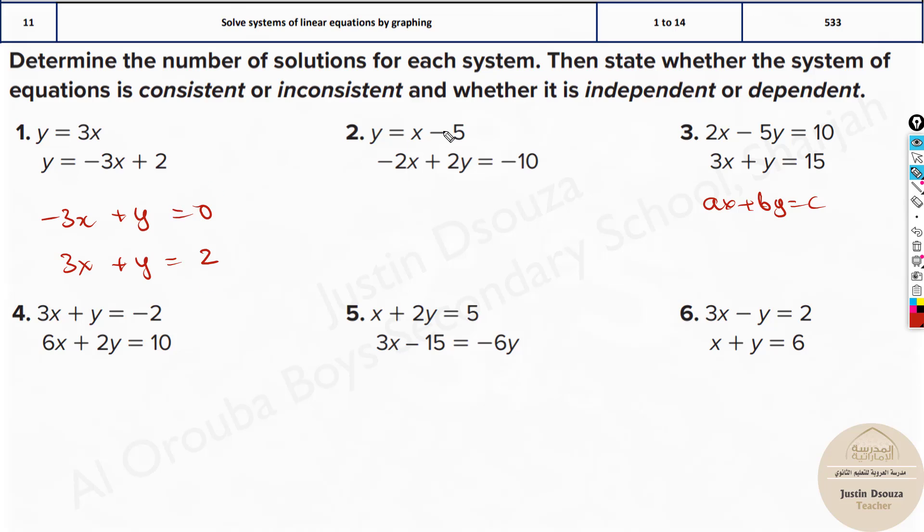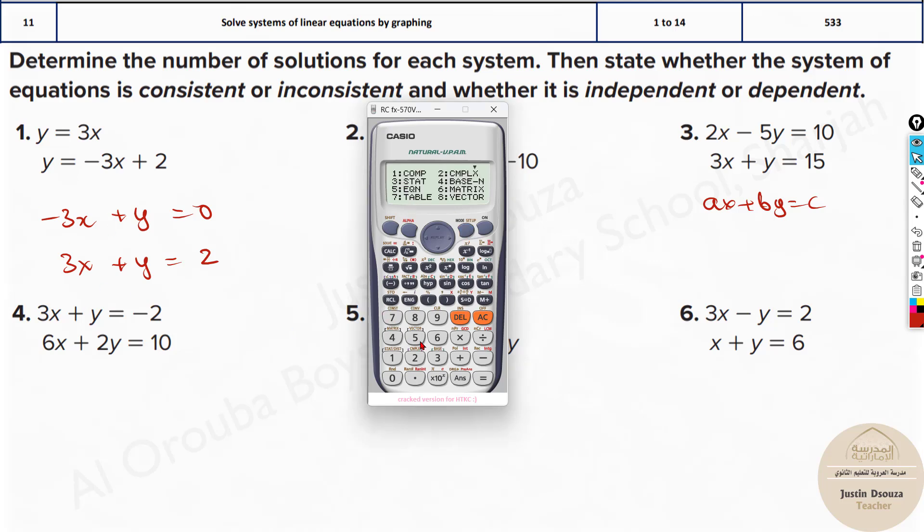Now, when you solve it in the calculator, you get answers. So how will it help me to understand this consistent or inconsistent? I'll tell you in a minute. First, let's solve it in the calculator. We need to use mode and these are equations. So it's 5. And now which option? It's not 3 and 4 because it's squared and cubic.